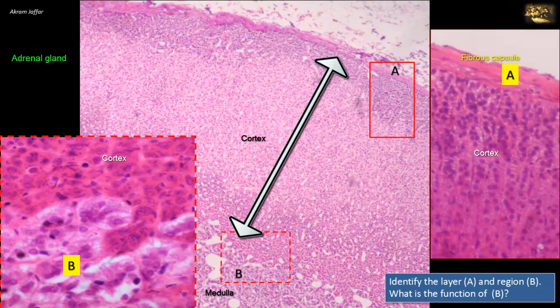B is the centrally placed medulla, consisting of closely packed clusters of secretory cells, numerous capillaries and venules. The cells of the adrenal medulla secrete the catecholamine hormones: adrenaline and noradrenaline, also called epinephrine and norepinephrine.